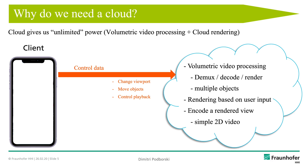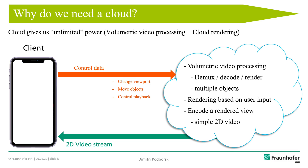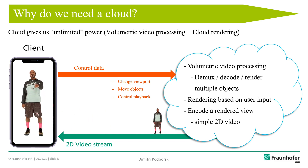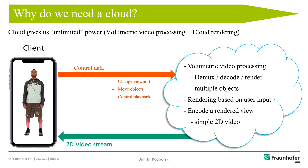The client sends control data to the cloud, for example indicating a viewport change or interaction with some objects. After the scene is rendered taking that control data into account, a 2D video stream is sent back to the client. So the client only needs to decode a simple 2D video, while still having control over the scene by sending control data and controlling the rendering process on the cloud side.